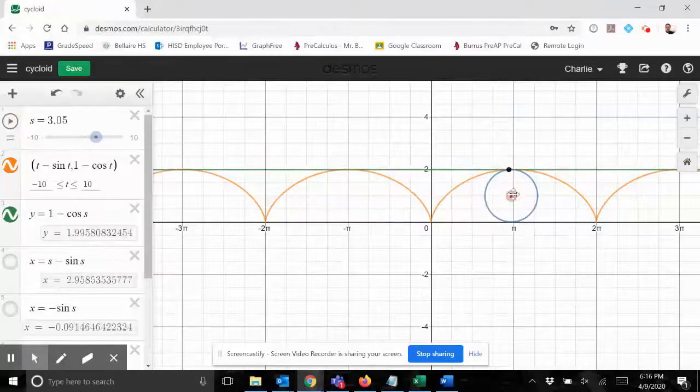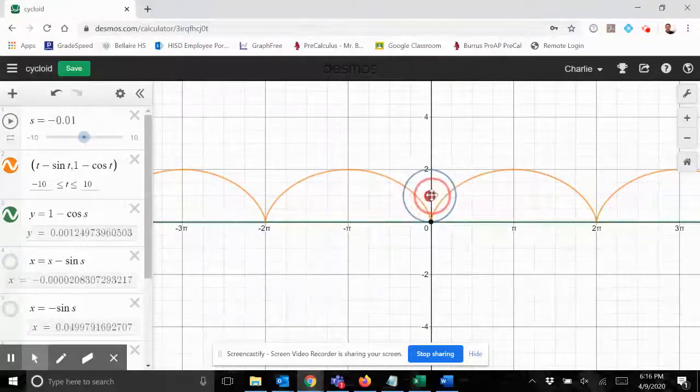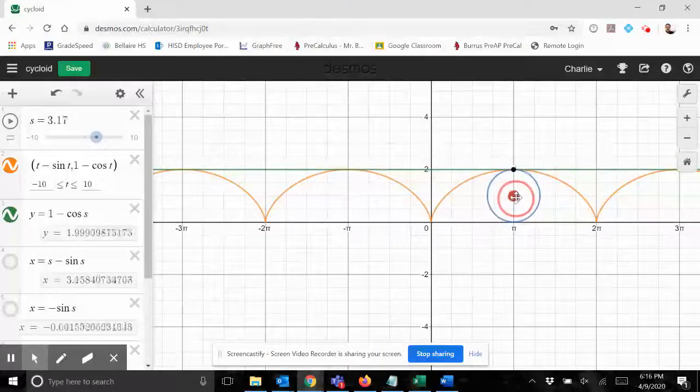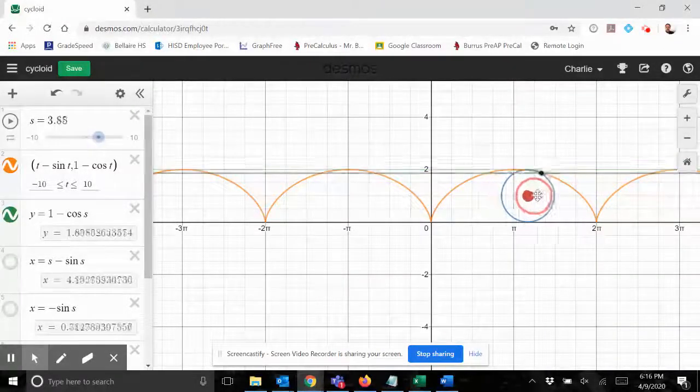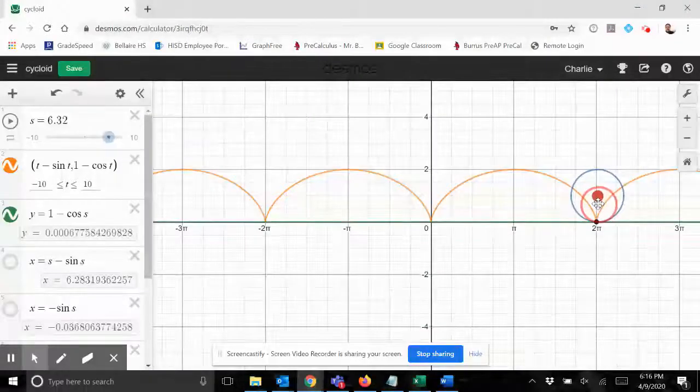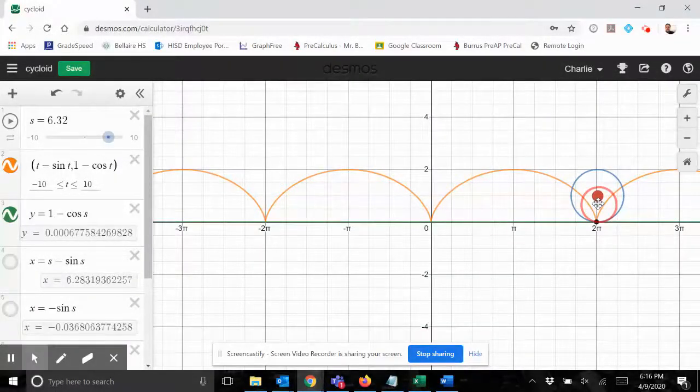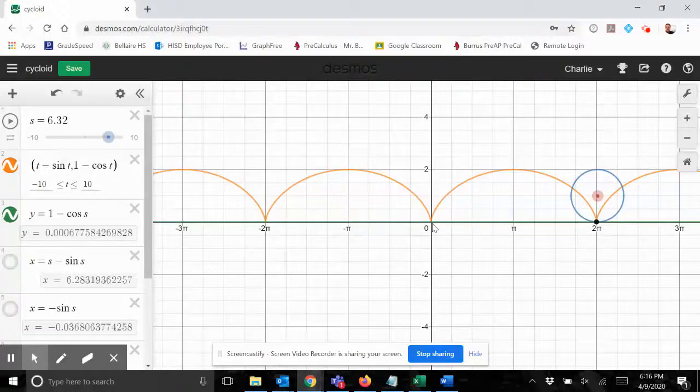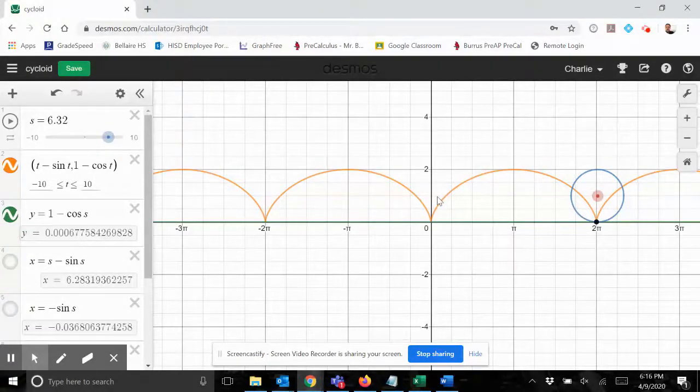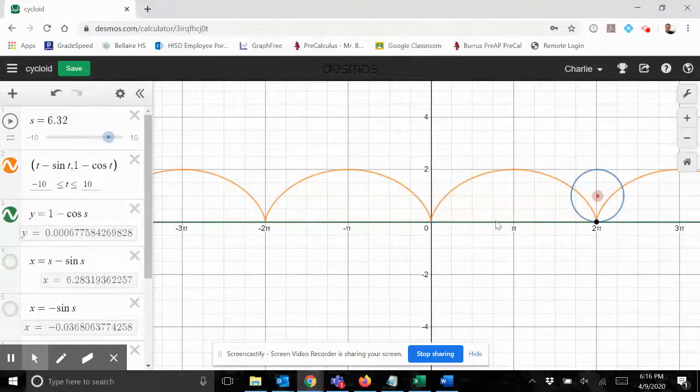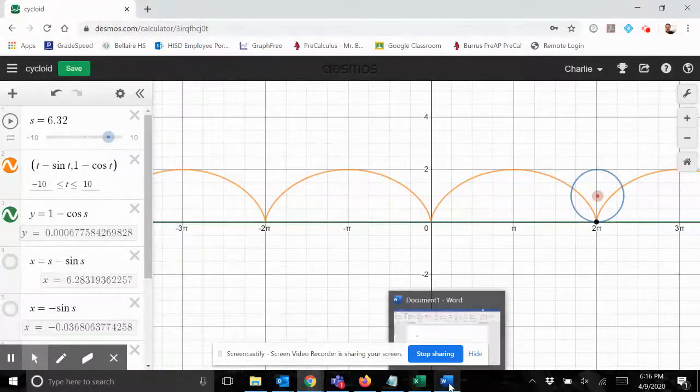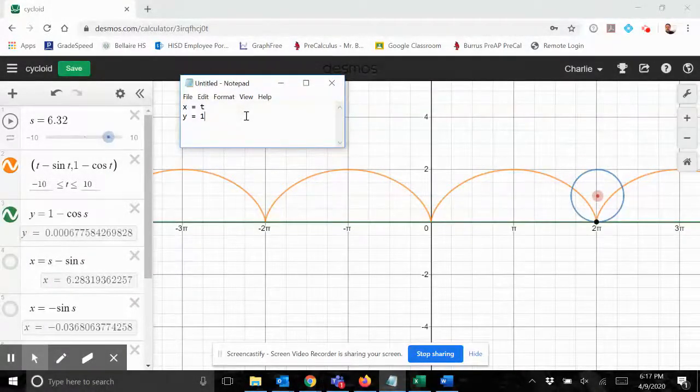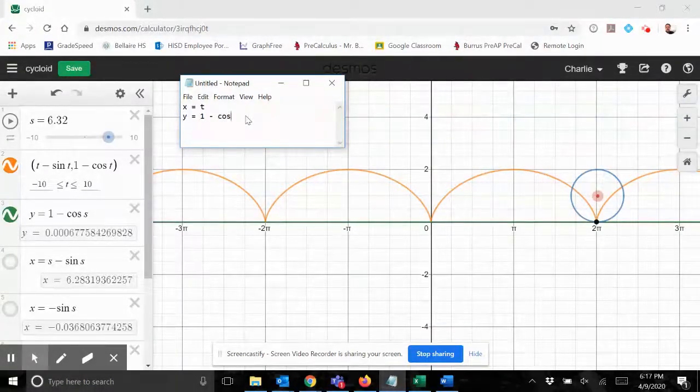Now hang on a second, let me stop this and pull this back again. When t equals zero, this point is at the minimum. When t equals π, the point is at the maximum. When t equals 2π, the point's back at the minimum again. I think I know what kind of simple harmonic motion this is. If it starts at the minimum, that is a negative cosine. It's a negative cosine where the amplitude is one, the vertical shift is one - that's why it goes between zero and two. The period is 2π. That is negative cosine of t plus one, or another way to write that would be one minus cosine of t.